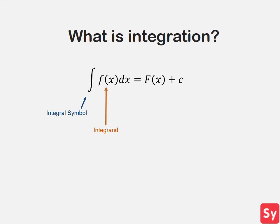f of x is our integrand. dx is our integration variable. It tells us along what axis we are taking the area of. F of x is the antiderivative. The derivative of the antiderivative is our integrand. c is our constant. Don't forget to add c. Not adding c is a popular mistake.